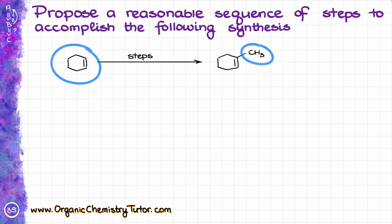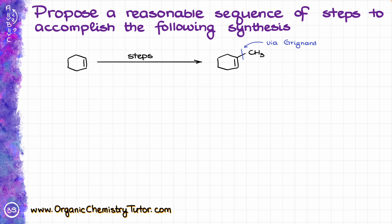The first thing we are going to do in our analysis is, as usual, see if we have any new carbon-carbon bonds. And of course we do have a new carbon-carbon bond that we are trying to create over here. The typical method of new carbon-carbon bond creation in our course is going to be via the Grignard reaction, or similar reactions — maybe with organolithium compounds or something like that.